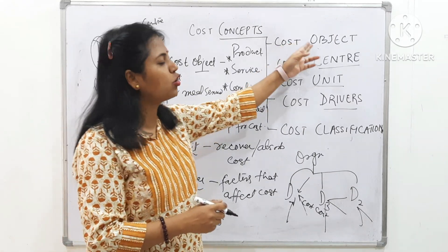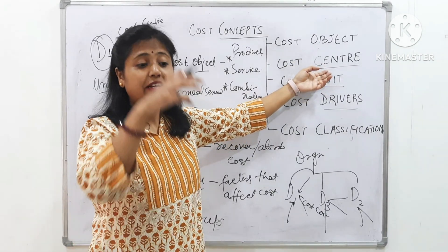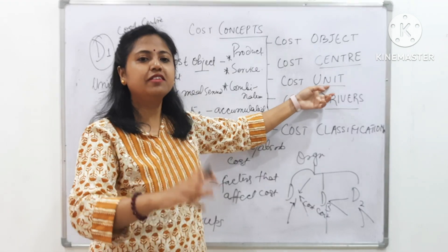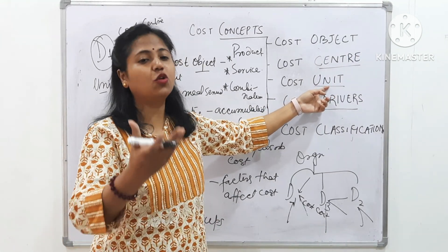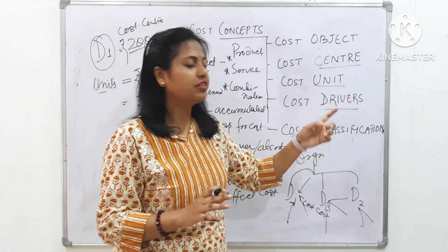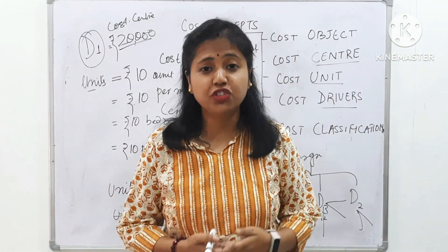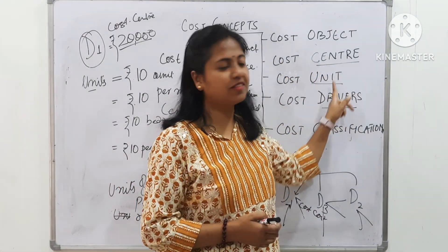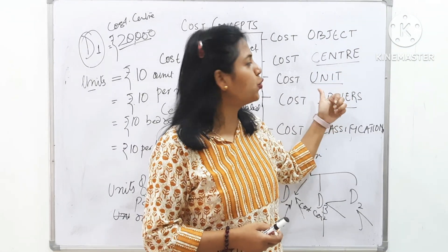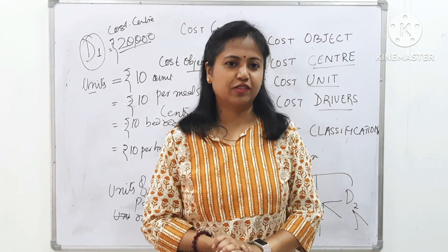To summarize: cost object is that for which we are ascertaining the cost — it can be a product, service, or department. Cost center is that section, division, person, or equipment for which cost is accumulated and ascertained. Cost unit is the measurable unit in terms of which cost is expressed and recovered. Cost drivers are all factors which influence cost. Cost classification will be covered in the next video, along with the difference between cost center and cost unit, which is an important exam topic. Thank you for watching. PPTs of this discussion are available in the description box.